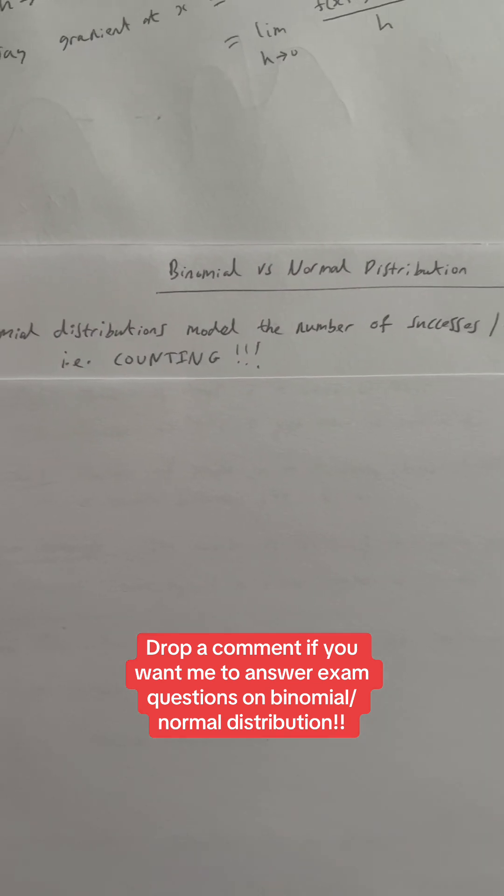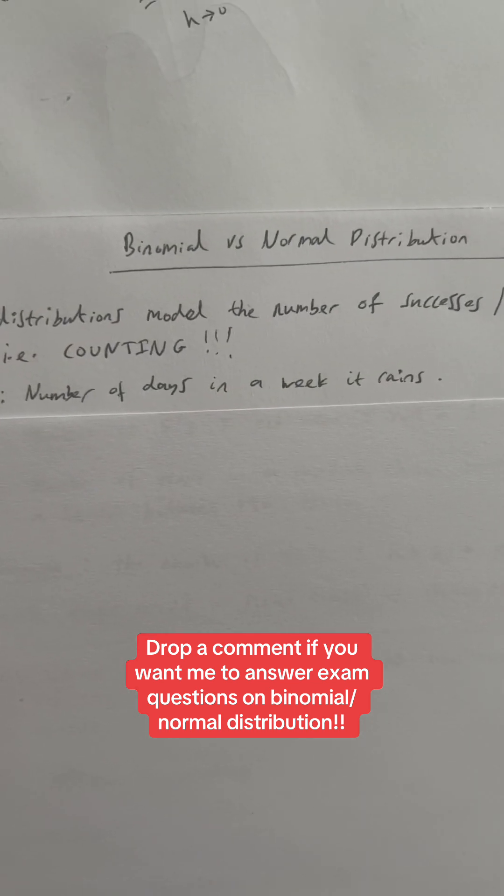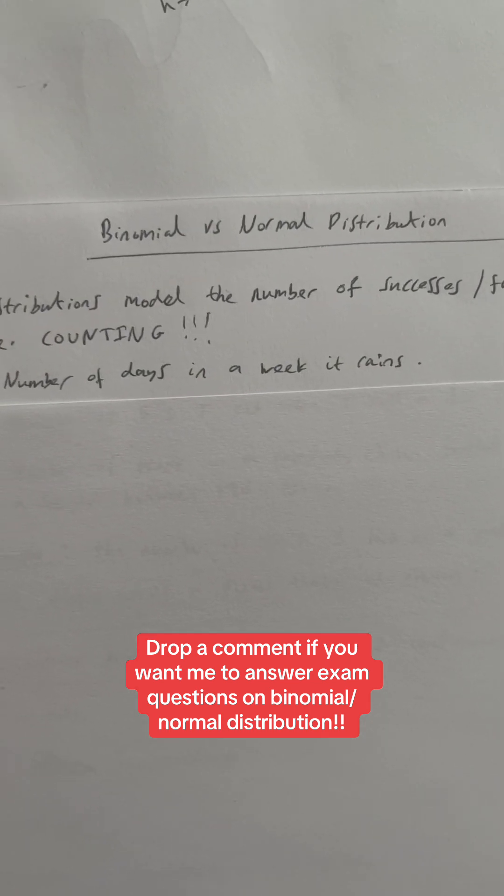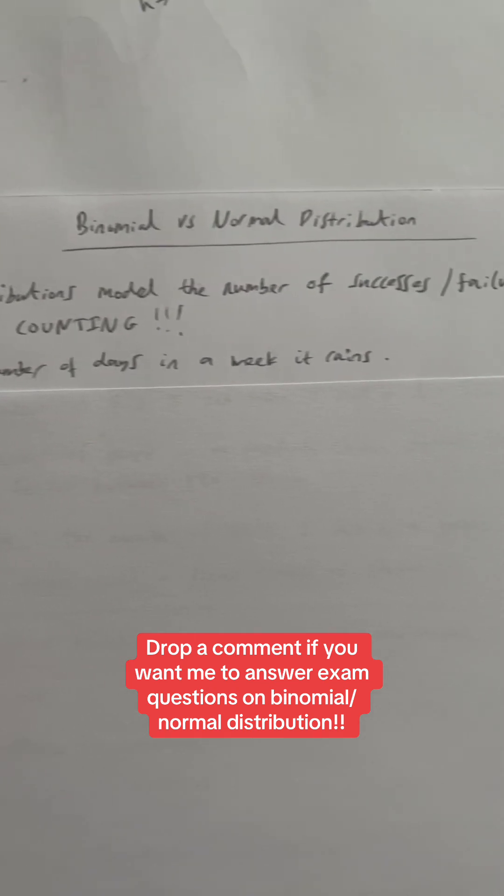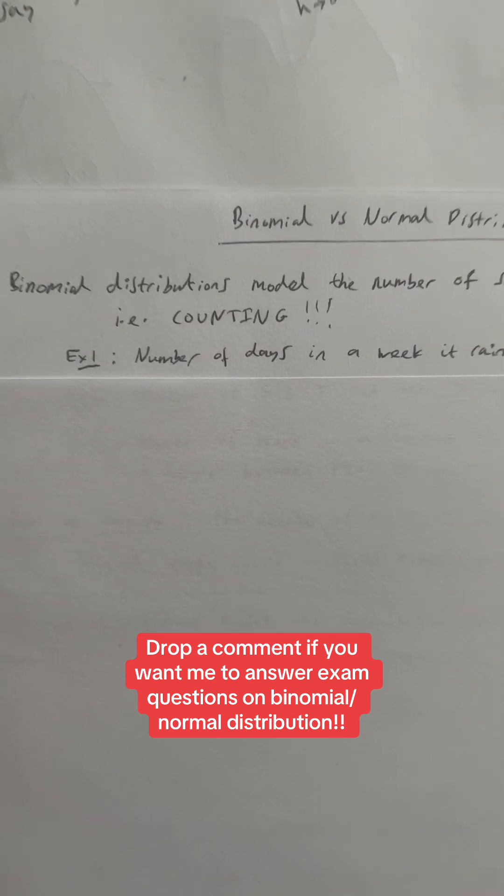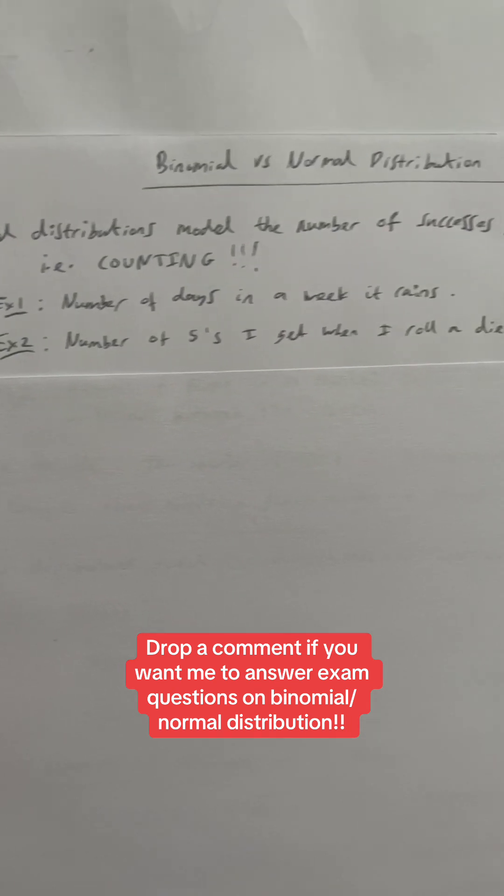So let's go through an example. An example could be the number of days in a week that it rains. You've got seven days in a week. You could have a fixed probability of raining. So you could use a binomial distribution to model the number of days, counting the number of days that it rains.